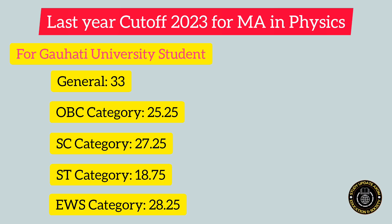First of all, let us learn about the previous year cutoff for MA in Physics for Guwahati University students — meaning students who have completed their graduations under Guwahati University itself or its affiliated colleges. For the general category, the cutoff was 33. For the OBC category, the cutoff was 25.25.